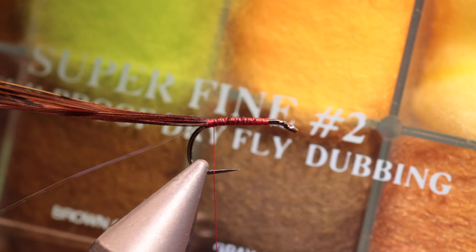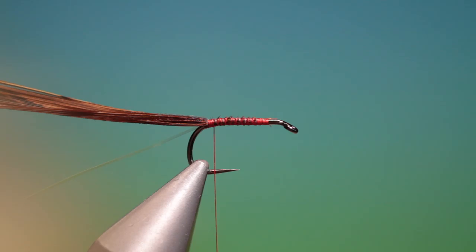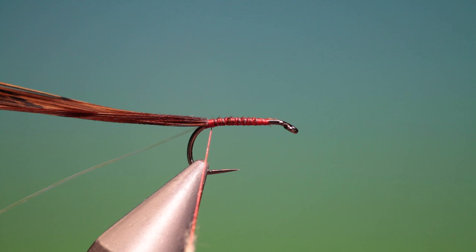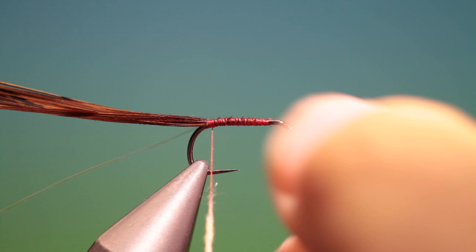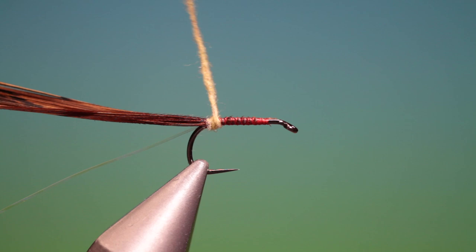Then we need some super fine dubbing, I'm using the tan dubbing here. We don't need to have this too tight. So we'll just spin it up and slide it up, catch it in.